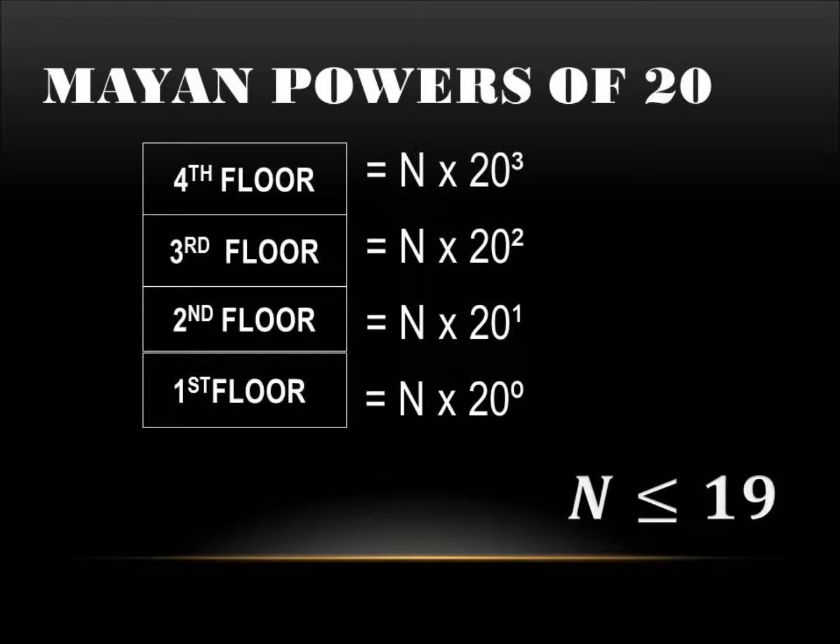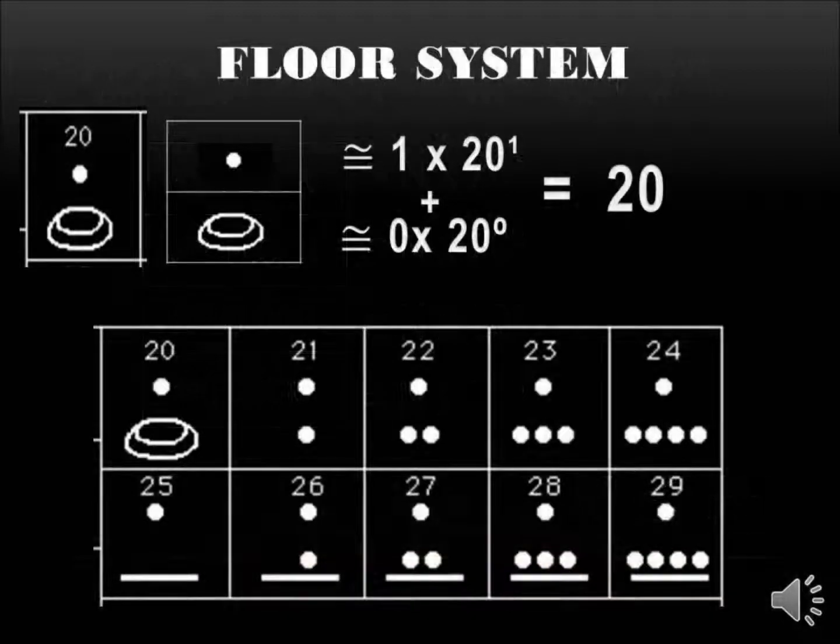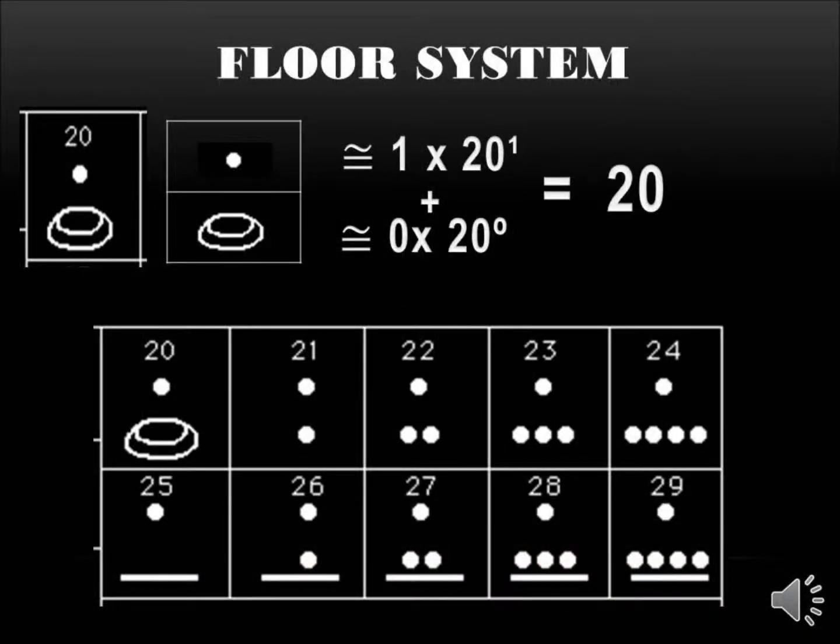Now the number has to be less than 19 in each floor. Versus in our power system, the number would be less than 9, or less than or equal to 9. So how would you write 20, we asked? Here you go. On your first floor, you would have 0, so that 0 times 20 to the 0 would equal 0. On your second floor, you have a dot representing 1. 1 times 20 to the 1st equals 20. 20 plus 0 equals 20.